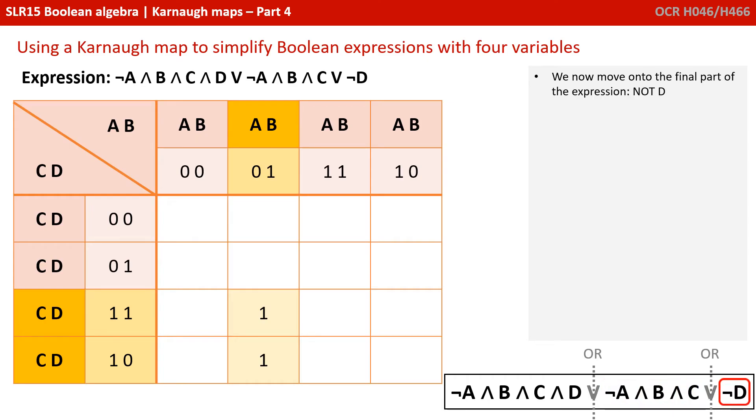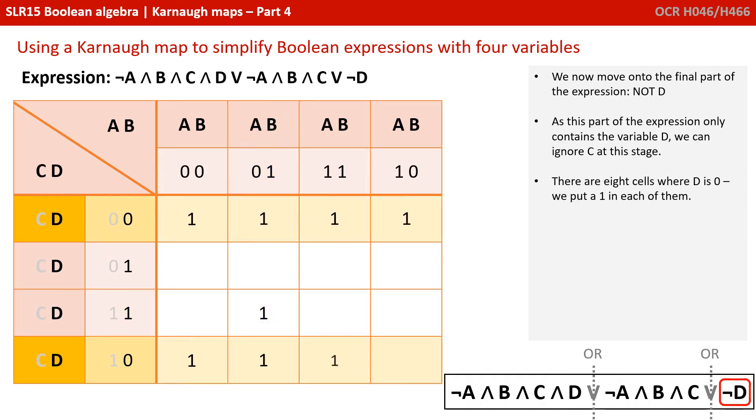We now move on to the final part of the expression, not D. As this part of the expression only contains the variable D, we can ignore C at this stage. And there are eight cells where D is 0, D being 0 because it's not D. We'll put a 1 in each of them.